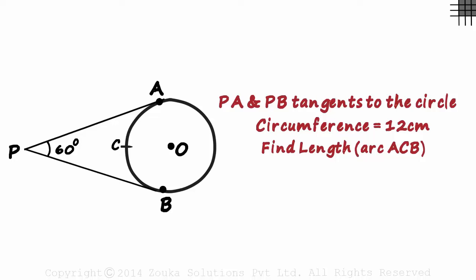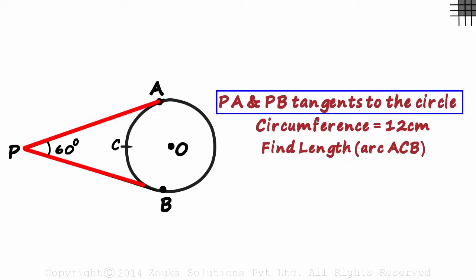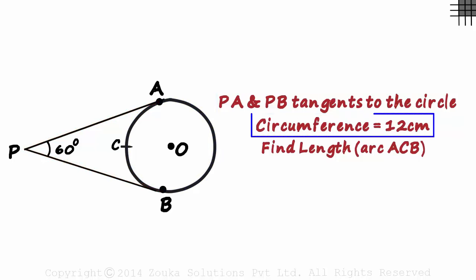So the first thing we are given is that PA and PB are tangents to this circle. We are also told that the circumference of this circle is 12 centimeters. And the two tangents form a 60 degree angle between them. How do we find the length of arc ACB?